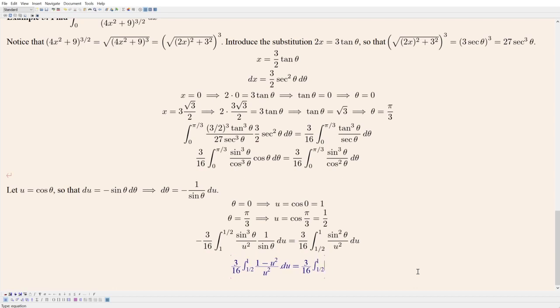So yeah, this is a cool example I think of doing multiple substitutions. Let's see, so one over u squared becomes u to the negative two, minus u squared over u squared just becomes one.